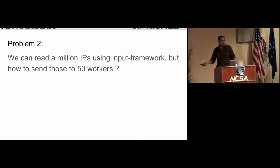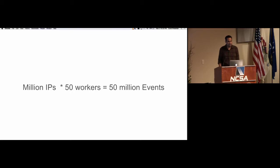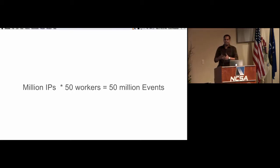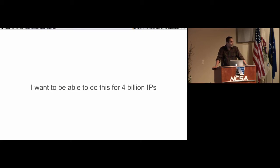There is another problem. We can use the input framework to read millions and millions of IP addresses, but then you send it to workers. If I read 1 million IP addresses, it goes to 50 workers — that's 50 million events — and then Bro starts crying and hating you. How do you deal with this? And actually 51 million is nothing. I want to do it for 4 billion.